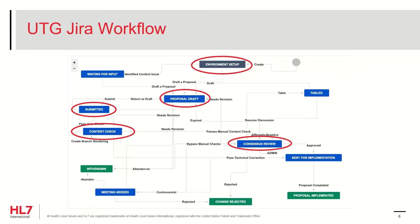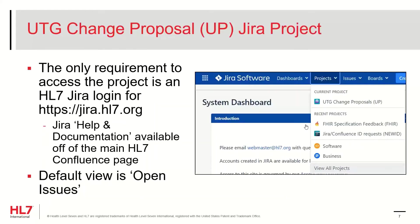Each change proposal follows these workflow paths. Each box represents a state that a proposal may enter based on the conditions described in these training sessions. In this session, we focus on the major pathways related to the submission of change proposals, circled in red. The vocabulary issues and change proposals are all entered and managed within the HL7 JIRA environment, and more specifically in the UTG change proposal, or UP, project.